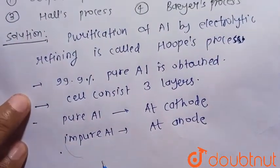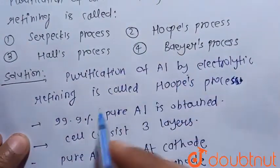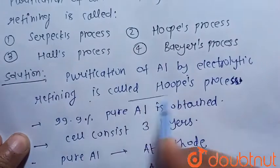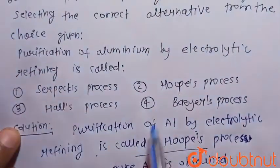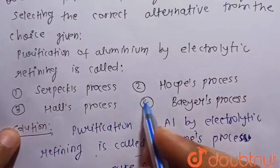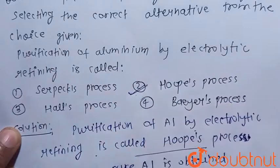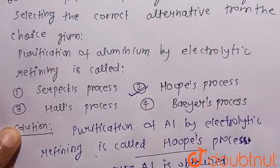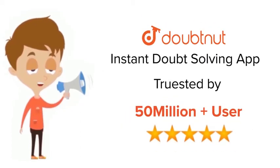Hence, purification of aluminium by electrolytic refining is called the Hoops process. Hoops process is given in option number two, so option two is the correct choice.